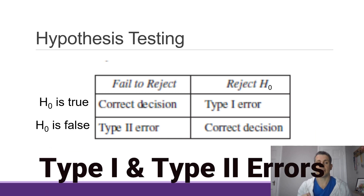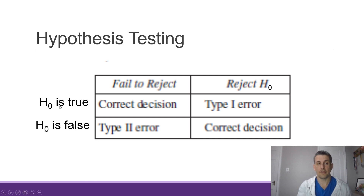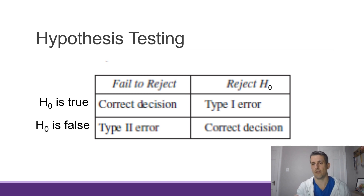In hypothesis testing, we're concerned about the null hypothesis. For example, if the null hypothesis is true, we really want to accept the null hypothesis. When we're talking about hypothesis testing, we usually say fail to reject the null hypothesis. Fail to reject really means kind of accept the null hypothesis, and that would be the correct decision.